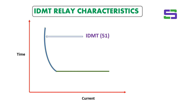The 51 relay has basically two parts. One is the inverse characteristic up to a certain point. The 51 relay is used for overcurrent protection in electrical power system networks. It is plotted on the TCC curve — the time current characteristic curve — where current is on the X axis and time is on the Y axis.